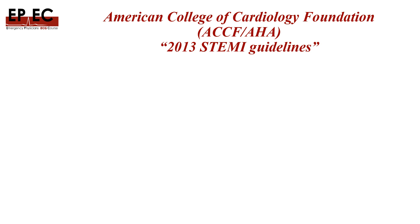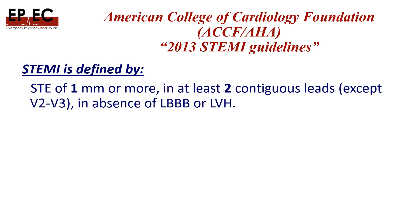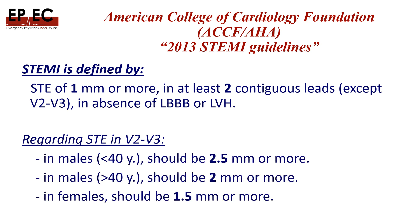The AHA and ACC 2013 guidelines define STEMI as 1 millimeter of ST elevation in 2 contiguous leads anywhere in the ECG except V2 and V3, in the absence of left bundle branch block or left ventricular hypertrophy. Regarding V2 and V3: in a male less than 40 years old, up to 2.5 millimeters is allowed; in a male more than 40 years old, 2 millimeters or more; and in a female, 1.5 millimeters or more regardless of age.